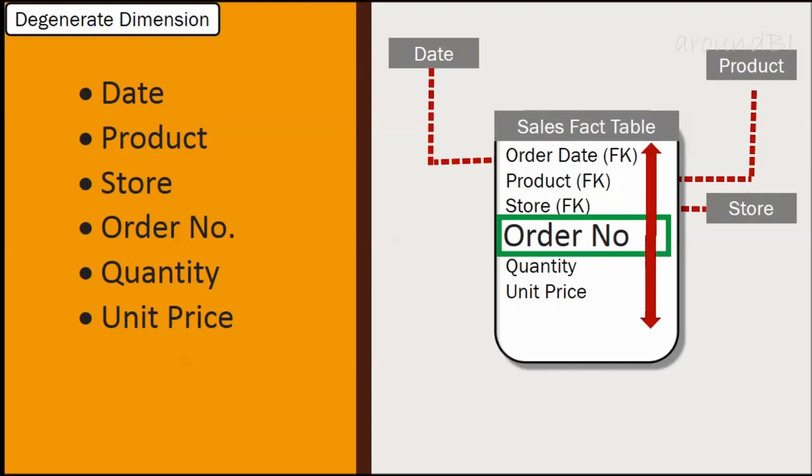Other possible examples of degenerate dimension would be invoice number, purchase order number, or policy number.